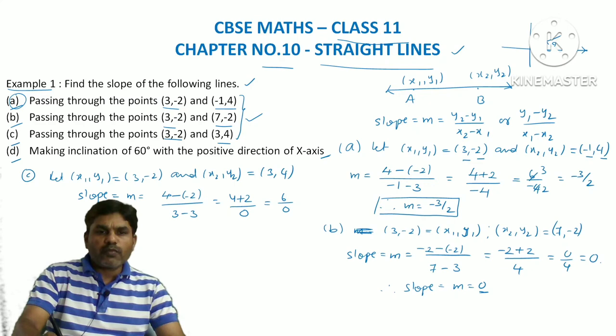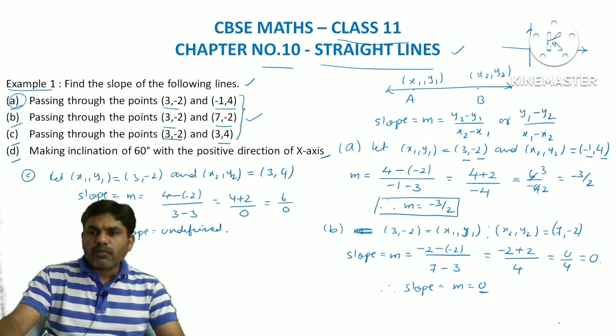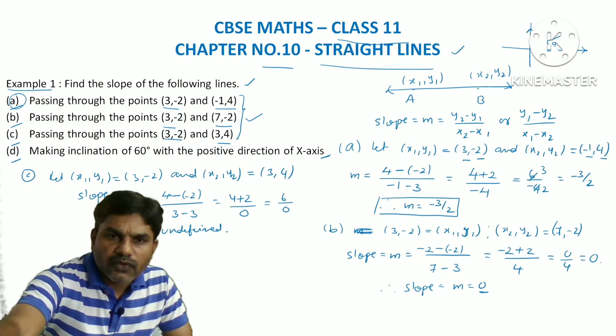That gives us (4 + 2) / 0 = 6 / 0, and division by 0 is undefined. So slope is undefined. When slope is undefined, the line is coinciding with the y-axis, meaning the angle between the positive x-axis and the line is 90 degrees.